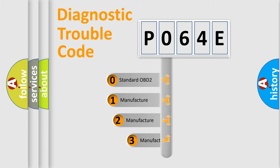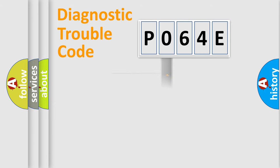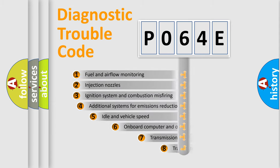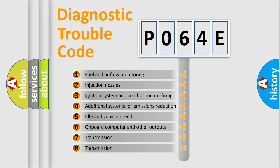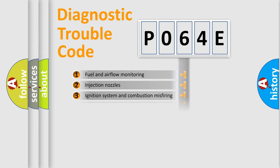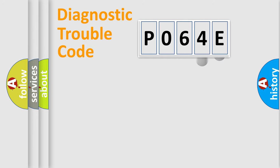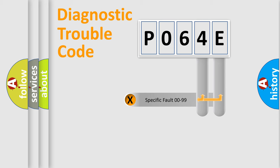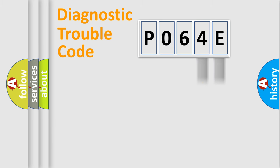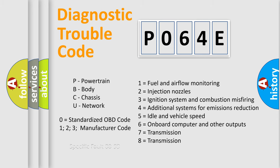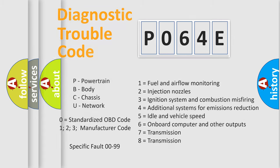If the second character is expressed as zero, it is a standardized error. In the case of numbers 1, 2, or 3, it is a more specific expression of the car-specific error. The third character specifies a subset of errors. This division is valid only for the standardized DTC code, where only the last two characters define the specific fault of the group.